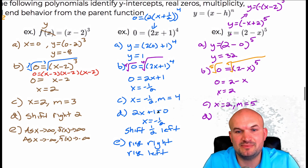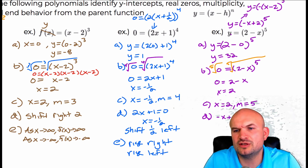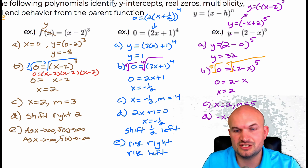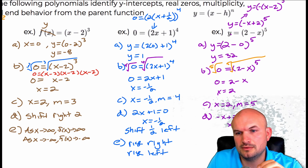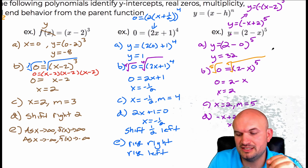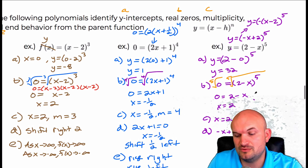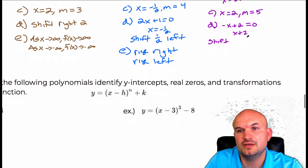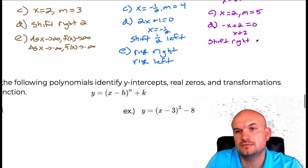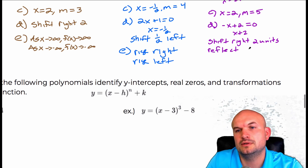For the vertical transformations — take the inside of the function and set it equal to zero. This tells you the shifting left or right. So with negative x plus two, when I solve that, the graph is being shifted two units to the right. It's also being reflected about the y-axis. So we're going to say shift right two units and reflect about the y-axis.